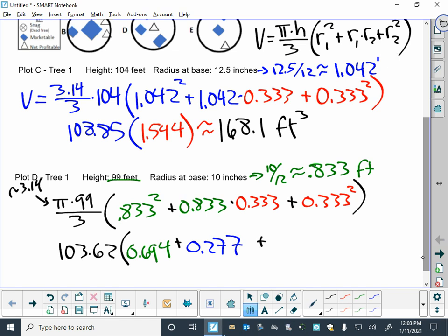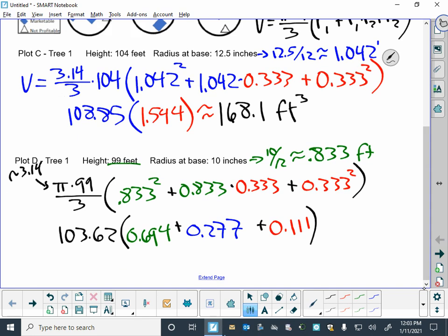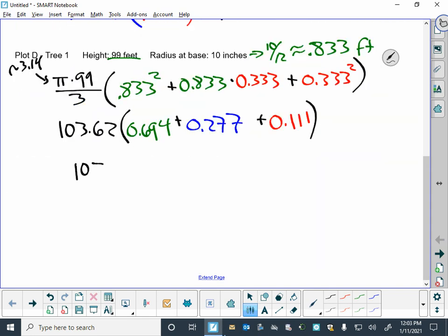And we will add on to that the 0.833 times 0.333, which is about 0.277, and finally the 0.333 squared, which is about 0.111. So I've got the 103.62. When I add all those pieces together—0.694 plus 0.277 plus 0.111—I get on the inside there about a 1.082, times my 103.62, which is about 112.11 cubic feet in that tree.